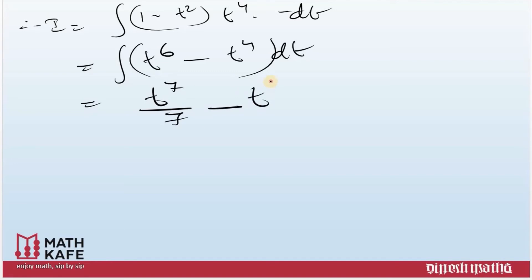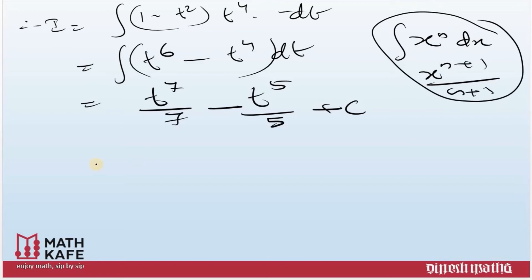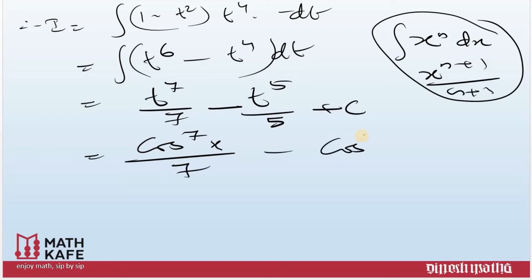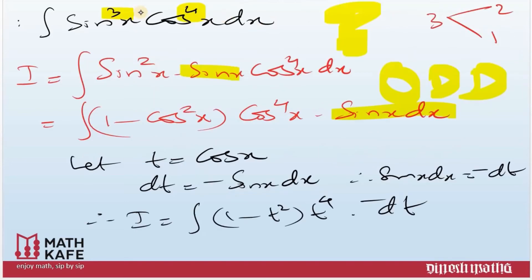Integrating (t⁶ - t⁴) dt using the basic rule ∫xⁿ dx = xⁿ⁺¹/(n+1): we get t⁷/7 - t⁵/5 + C. Replacing t with cos x: the final answer is cos⁷x/7 - cos⁵x/5 + C.